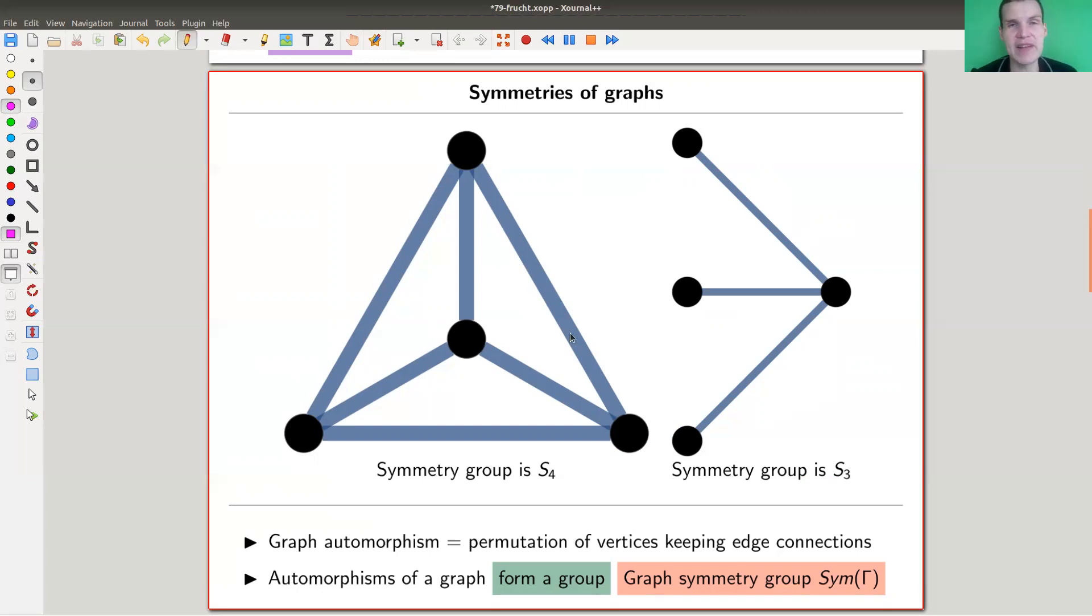So graph automorphisms is just permutation of the vertices that keep edge connections, right? A symmetry of a graph. That's exactly what it would be. It doesn't really matter whether it's embedded or not. I just embed them by drawing them or put them in R2, but they don't even need to be embedded. But actually, I should like to think of them as an abstract object just given by vertices and edges. And there's automorphisms, automorphisms of any kind of object always form a group. And this is a graph symmetry group.